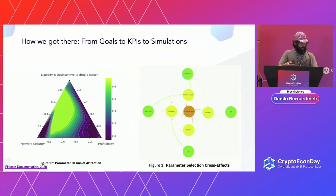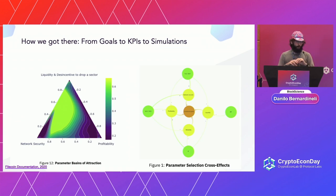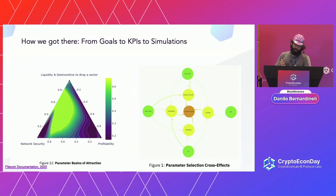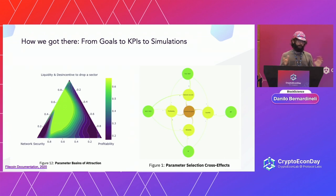One thing we mapped out, based on the combination of all those results, is how those economic parameters would interact with specific goals. Some of them — like the initial pledge factor, which is actually the initial storage pledge — were only important for liquidity goals. No matter the value we picked, it would be relevant only for liquidity, not super important for the others. But others, like the consensus pledge, or how much we would release immediately, or the duration of vesting, would have interactions that sometimes would cancel each other out.